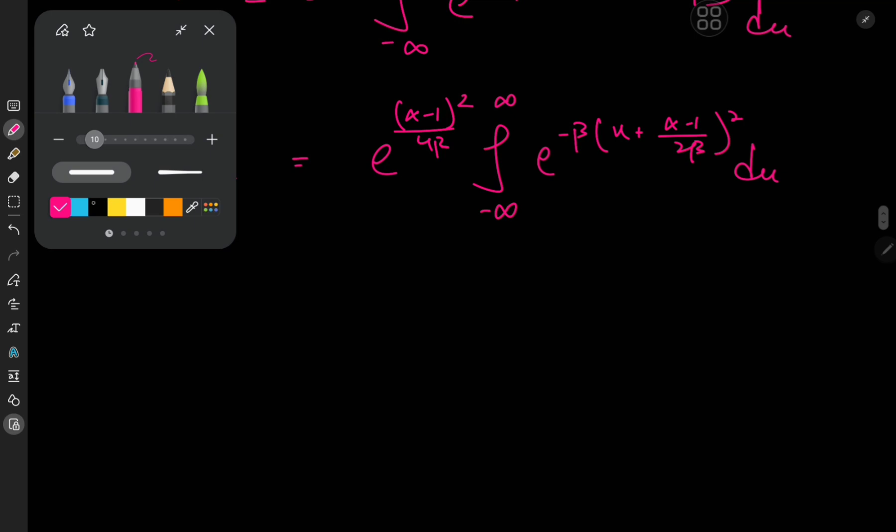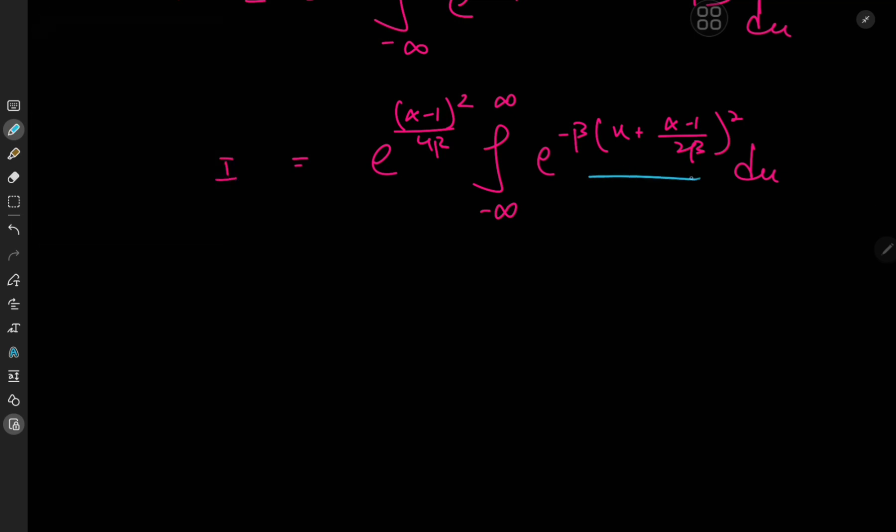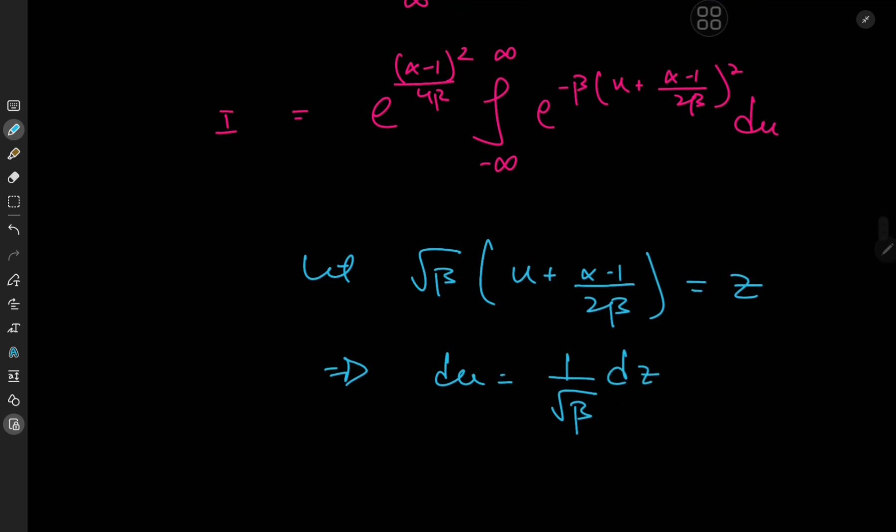We're going to take this thing here. Rather, we're going to let root b times u plus alpha minus 1 divided by 2b equal to z. This implies that du equals 1 by root b dz.